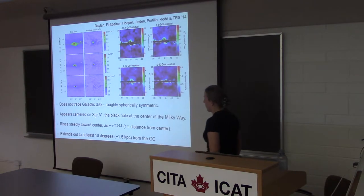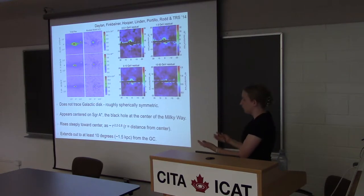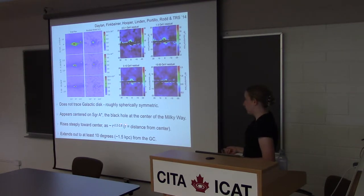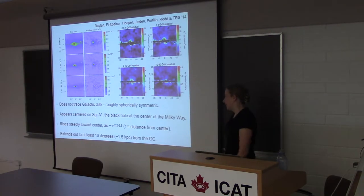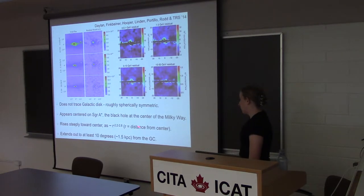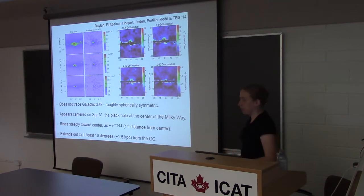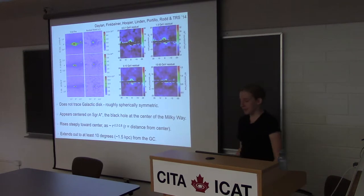The angular resolution of Fermi is between 0.1 and 1 degree. The signal rises very steeply toward the center. If you assume this is a spherically symmetric source of gamma-ray emission seen in projection, then the luminosity per unit volume scales roughly as r^{-2.2} to r^{-2.8}. If this were a dark matter annihilation signal, that would correspond to dark matter density rising as r^{-1.1} to r^{-1.4}, because the signal scales as density squared.